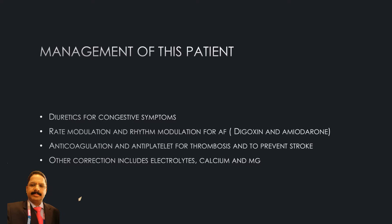We have given diuretics for her congestive symptoms, particularly loop diuretics — torsemide or furosemide. To control her rate and rhythm, we prescribed digoxin for rate modulation and amiodarone for rhythm modulation. Both drugs work very well in atrial fibrillation with congestive heart failure. We also prescribed anticoagulation and antiplatelets to prevent thrombosis and stroke. Other treatments include electrolytes and calcium-magnesium management.